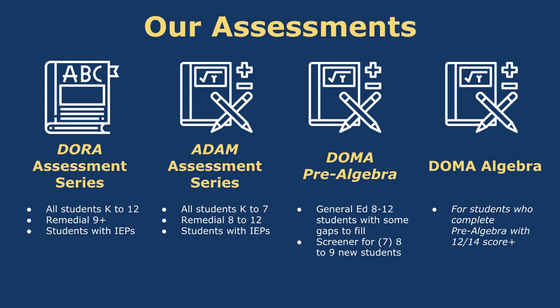In reading there's only one assessment: DORA. It's good for K–12 students; however, typically in high school you'd only assess remedial students. If someone is ninth grade and above, you'd only test them with DORA if they're struggling with reading — otherwise they're likely fine with foundational reading. Of course, students with IEPs at all ages and grade levels would be appropriate to assess with DORA.